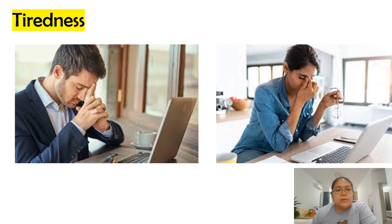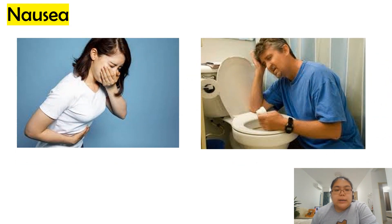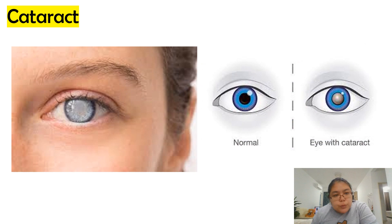For tiredness — when you are working or doing something and you feel very tired, this could be an effect of radiation. Nausea means you feel like vomiting even when you see food. For cataract, the eye becomes white at the center — the normal eye versus the eye with cataract shows the problem clearly.